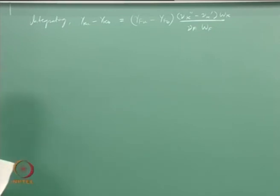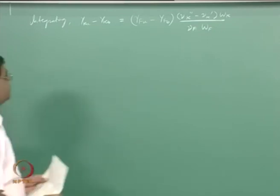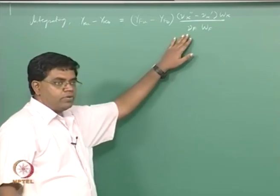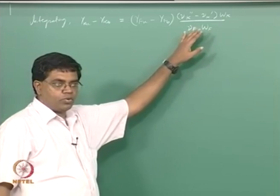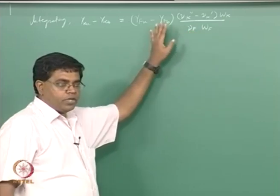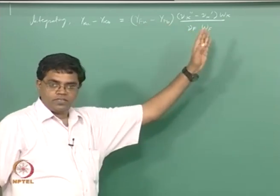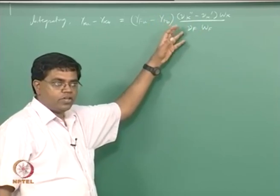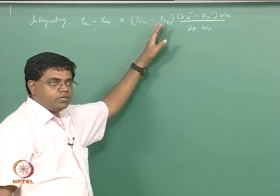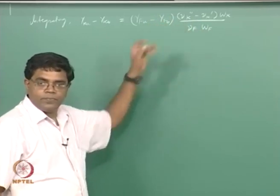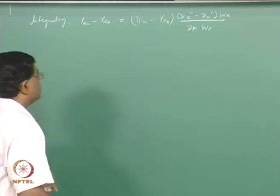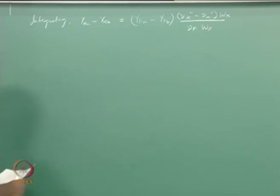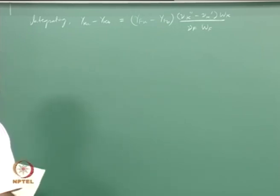Taking any k-th species relative to fuel, the left and right hand sides give: (y_{fu} minus y_{fb}) times (nu_k'' minus nu_k') times W_k divided by nu_f times W_f. Note that nu_f is the stoichiometric coefficient for fuel, and there is no fuel on the right hand side, so (nu_k'' minus nu_k') for fuel is simply nu_f.